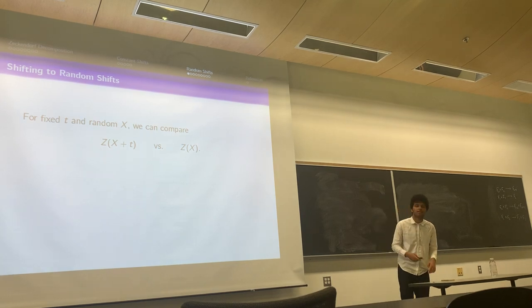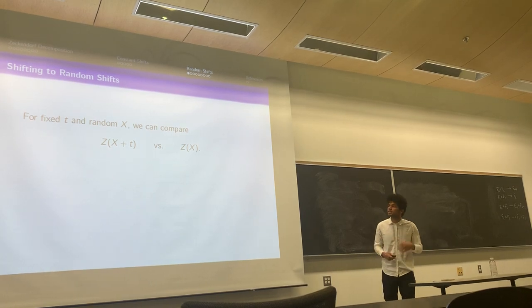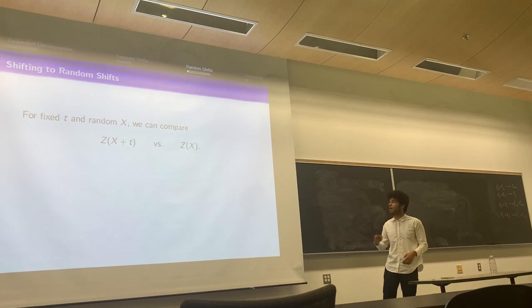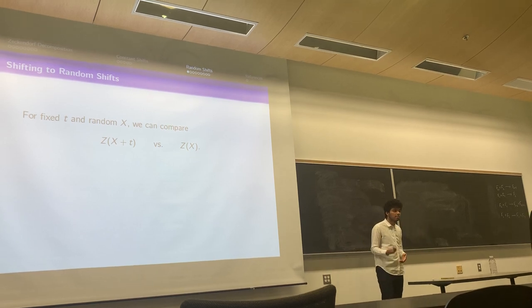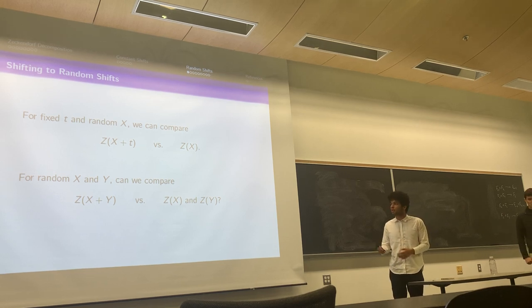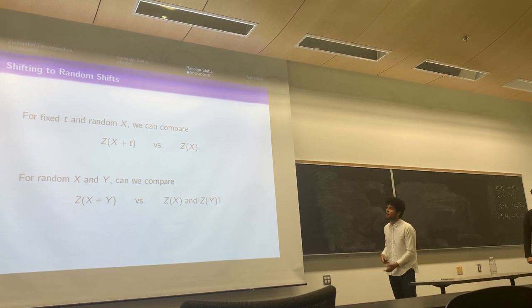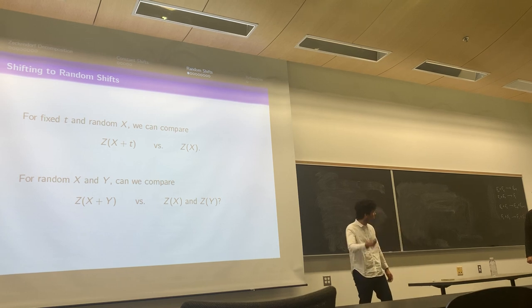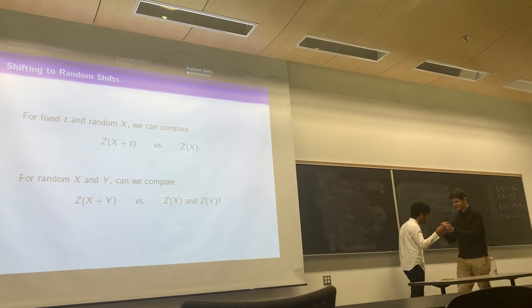For fixed T and random x, we can pretty easily compare Z(x+T) and Z(x). Another way to think about the question is if we start to pick a random x and a random y, how do we compare Z(x+y) versus Z(x) + Z(y)?